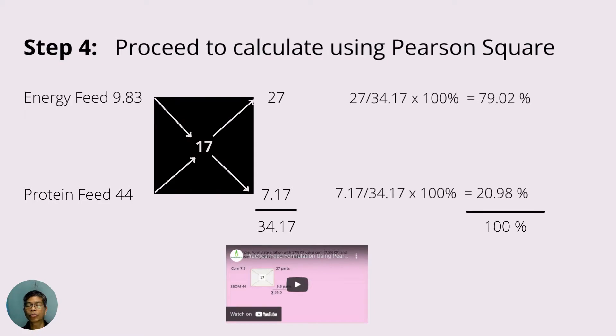Now the fourth step is to proceed to calculate using the Pearson Square, just as I showed you in my previous video. If you missed that part, you may wish to watch it by clicking on the link here. So moving on with our calculation, you will see that we need 79.02% of the energy feed to be mixed with 20.98% of the protein component to satisfy the requirement.